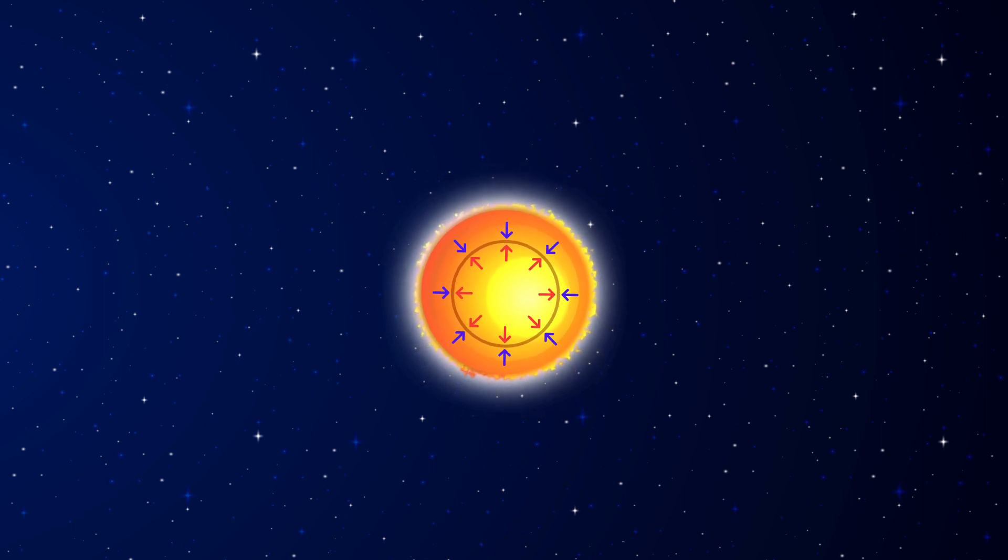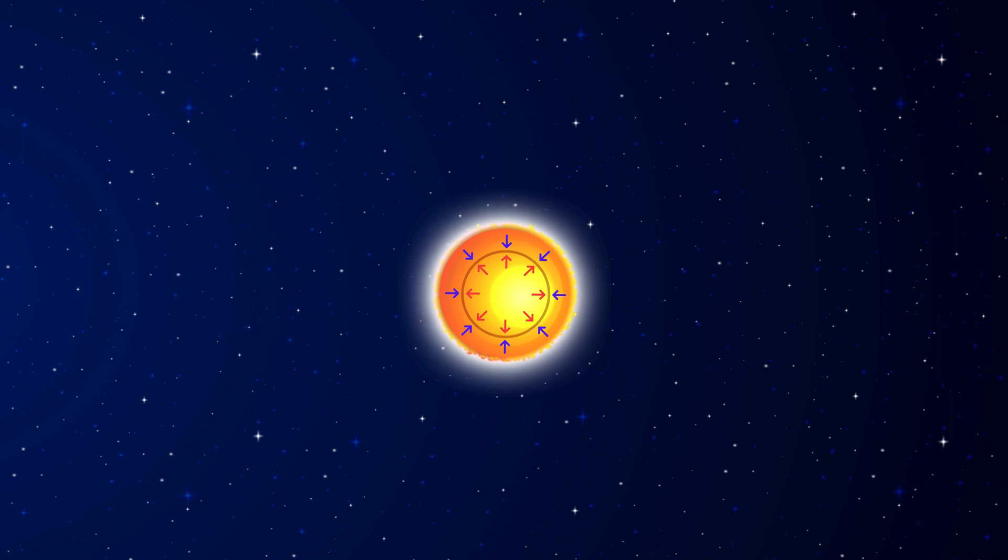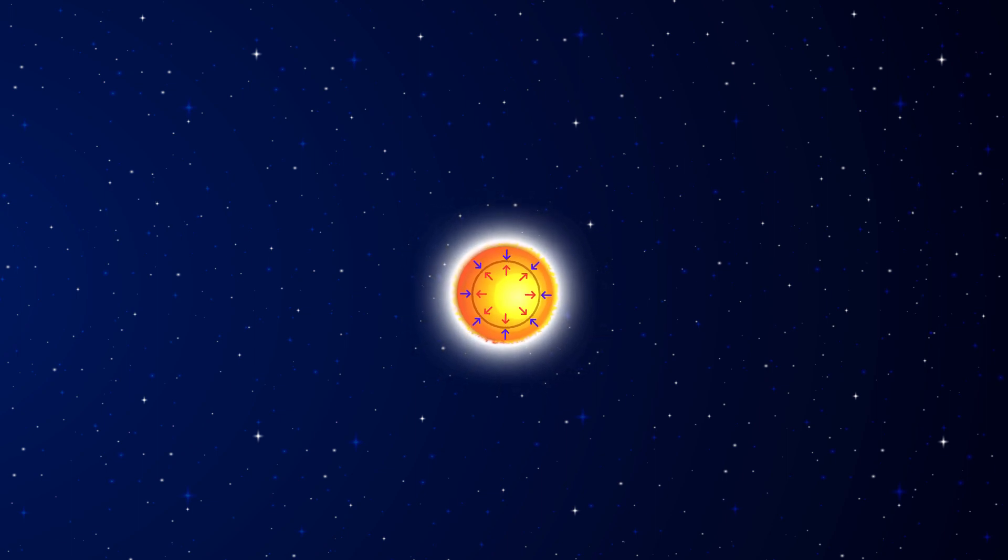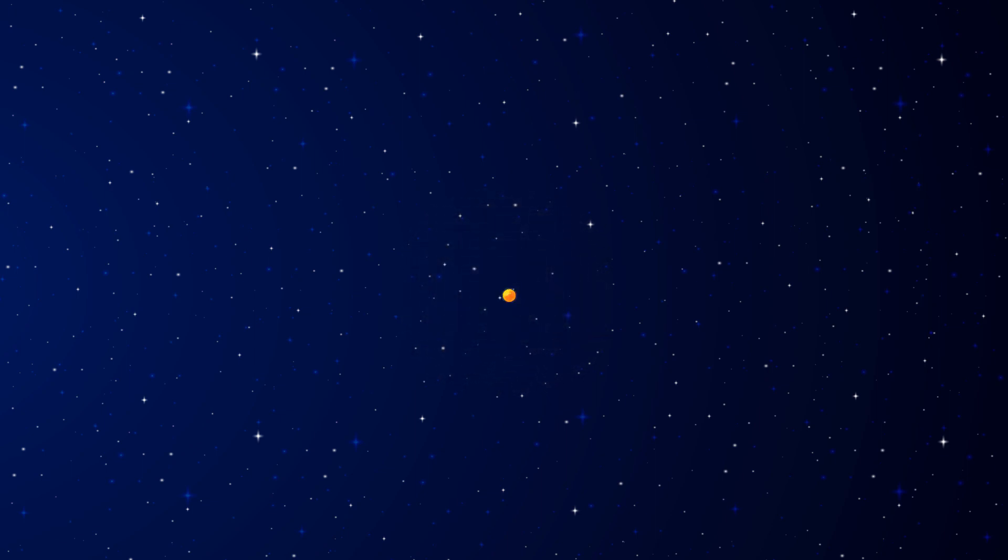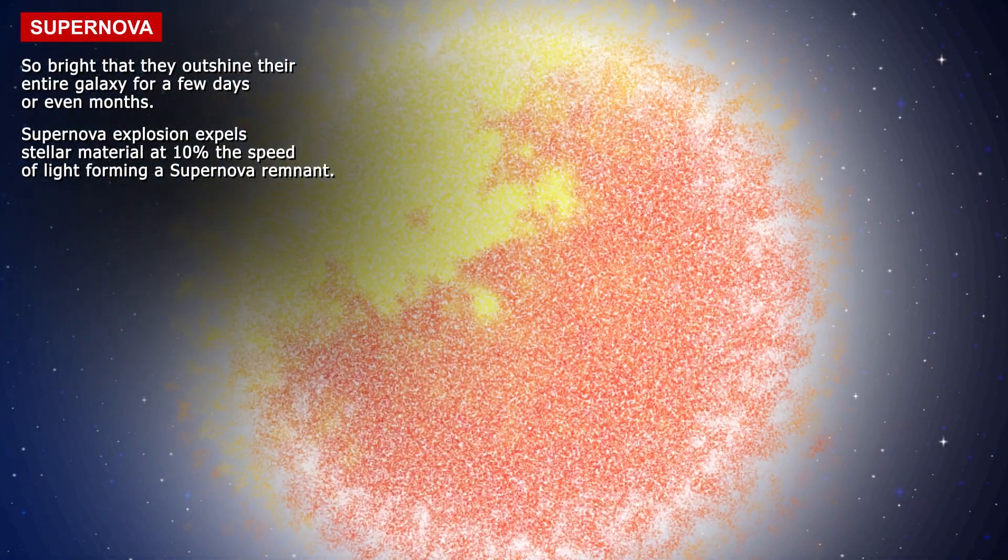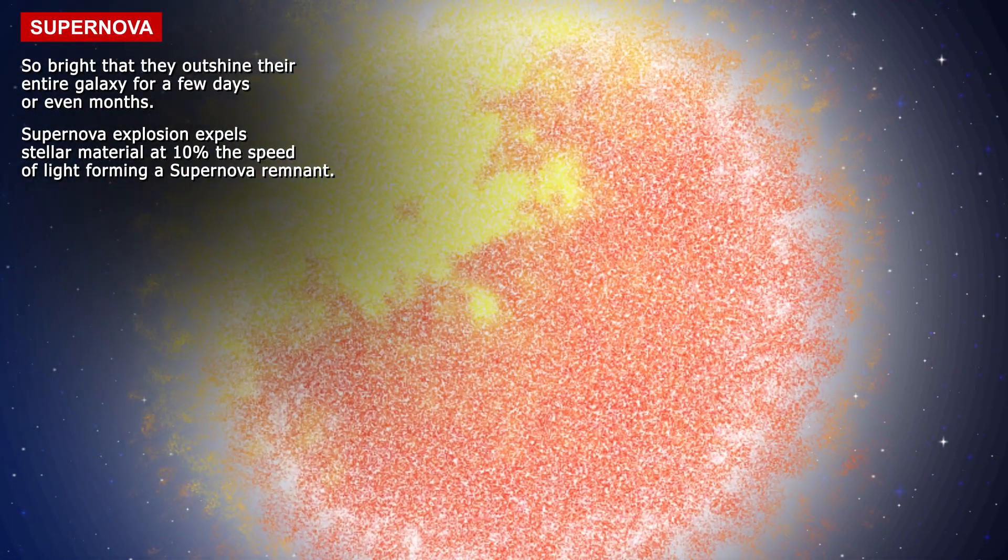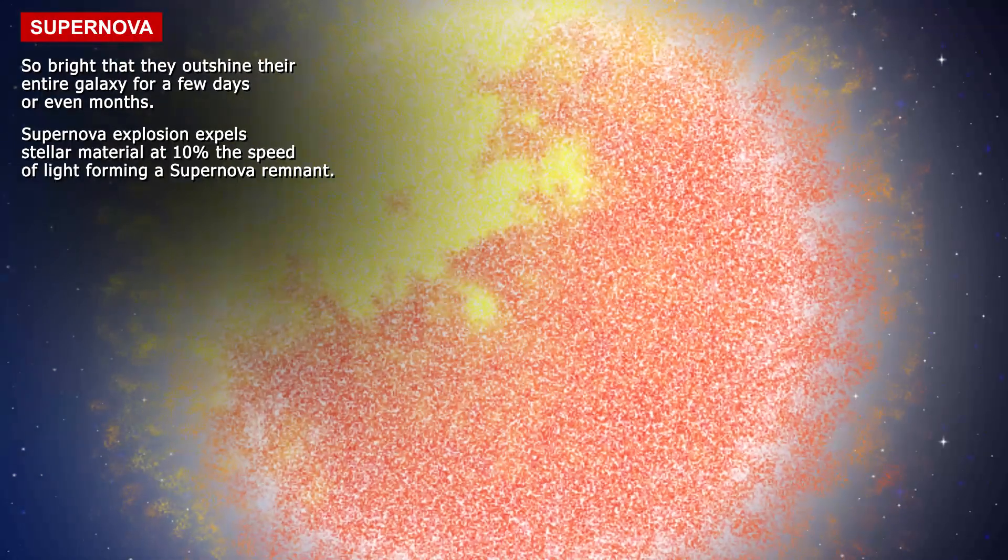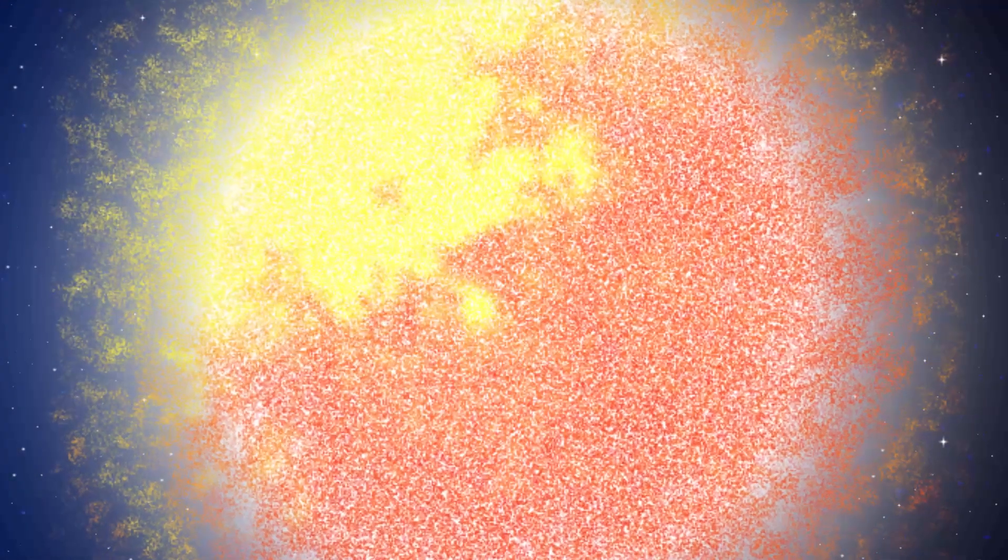As the star collapses, the inward pull accelerates the fusion of the remaining hydrogen and lighter elements, thus creating a violent explosion we call a supernova. This usually occurs if there was a lot of mass in the star in the first place. A larger mass ensures the star makes it to creating heavier elements.